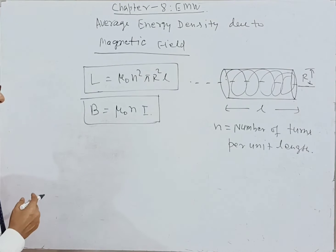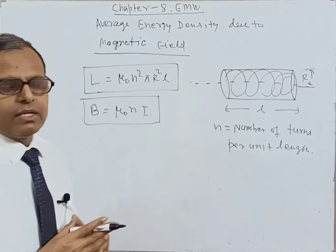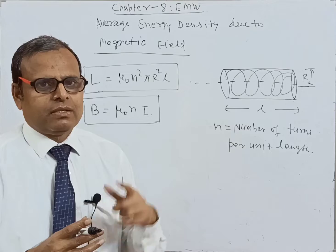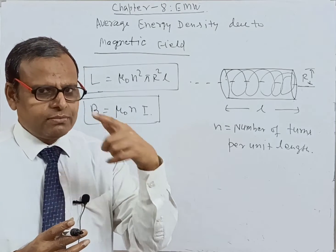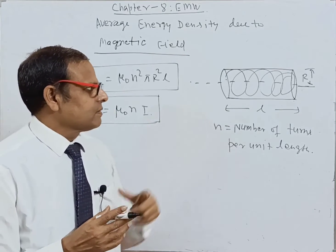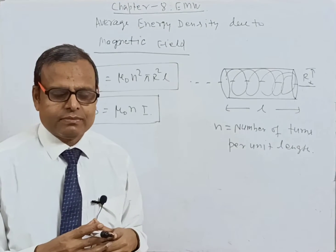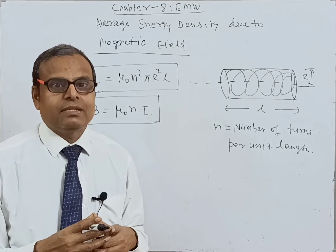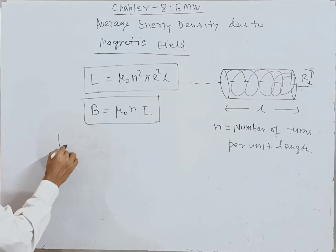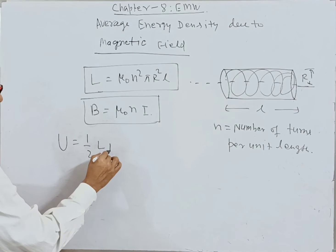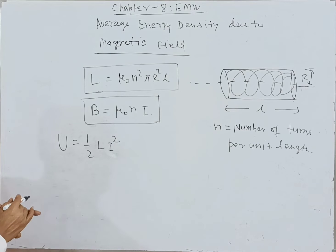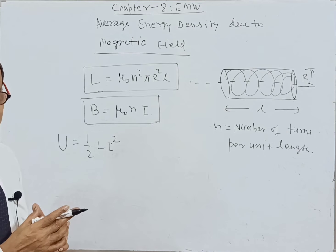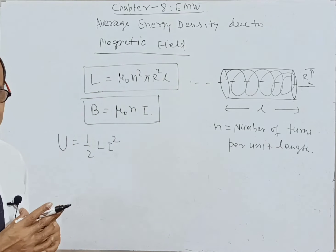Here we want the energy density. In the case of a solenoid, the magnetic energy is stored, and that magnetic energy U is given by U = ½Li². This is the magnetic energy stored in a solenoid.